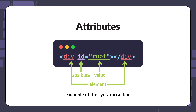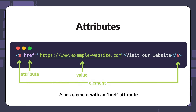Let's take a look at a few examples of common HTML attributes. The first example is the href attribute, which is used to specify the URL of a link. Without this attribute, the link would not work because there would be no destination URL. So you must include the href attribute to make the link functional.